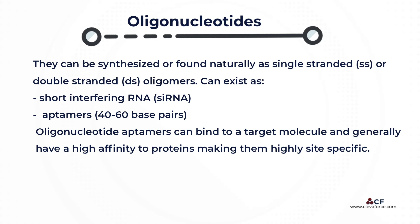Together with SS-DNA or RNA and DS-DNA or RNA, oligonucleotides also exist as short-interfering RNA, cRNA, and larger oligos known as aptamers which have 40 to 60 base pairs. These oligonucleotide aptamers can bind to a target molecule and generally have a high affinity to proteins, making them highly site-specific.